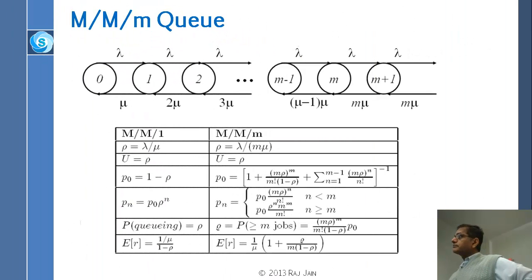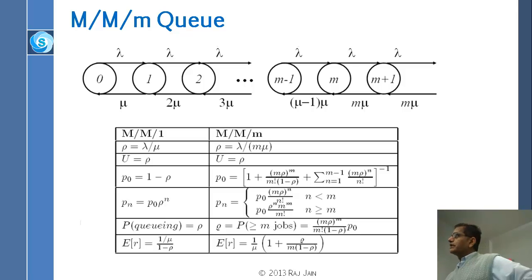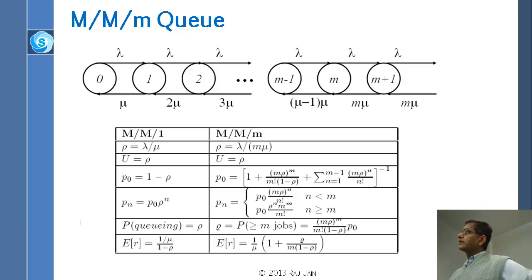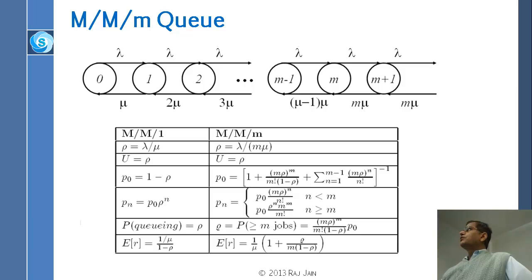Now, the MMM queue. The way it differs from MM1Q is that after M jobs are in the system, behavior changes. Before M jobs, the service rate cannot exceed the number of people in the system. When the first job arrives, one server is busy and service rate is mu. When the second job arrives, two servers are busy and service rate is 2mu. Finally, when M jobs are in the system, the service rate is M*mu. You can use the same birth-death process formulas to get P_n and other quantities.